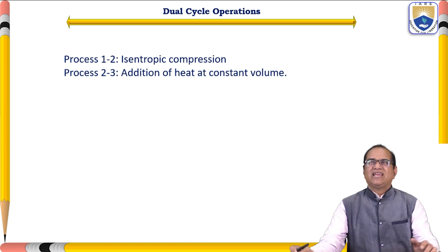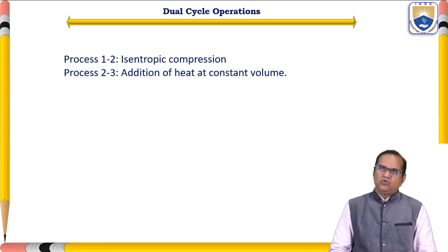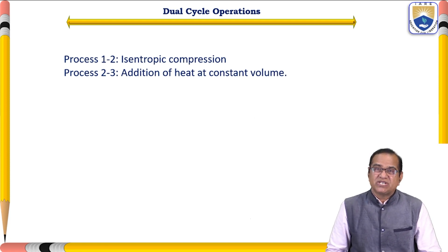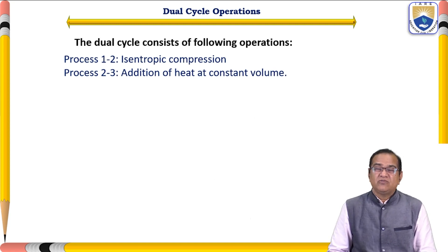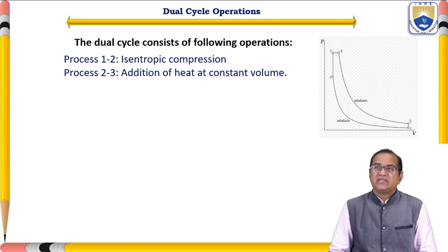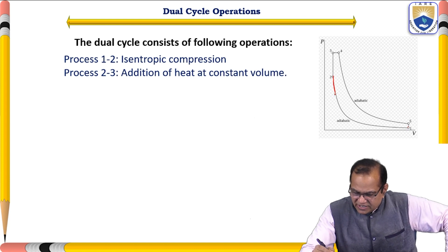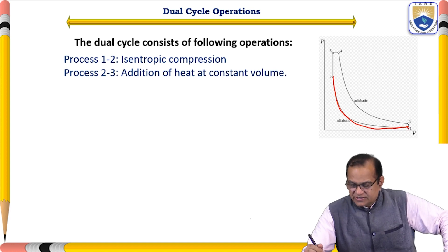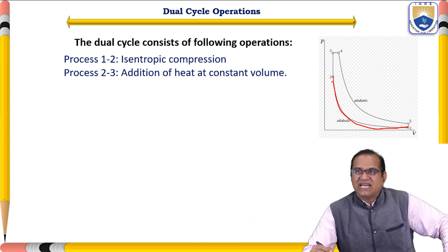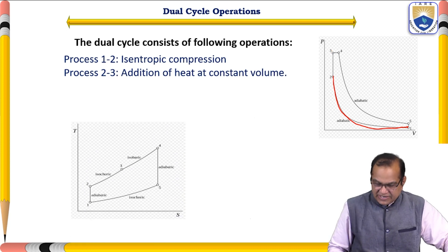For dual cycle operations, process one to two is isentropic compression. Process two to three is addition of heat at constant volume — you can see this on the PV diagram, with isentropic compression from state one to state two, and constant volume heat addition from two to three. Next we also have a T-S diagram for this cycle.